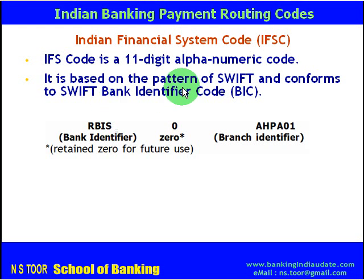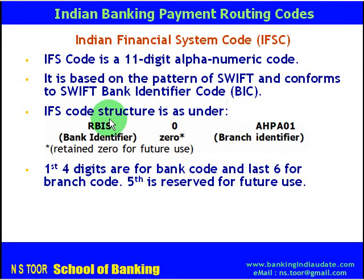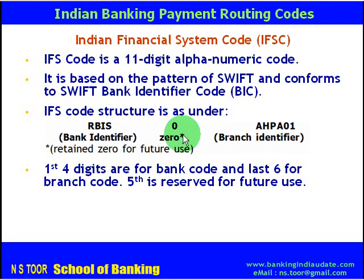IFSC is based on the pattern of SWIFT and it conforms to SWIFT BIC — Bank Identifier Code. The IFSC structure is like this: the first four digits represent the bank name, so they are called the bank code. The last six digits represent the branch identification, so they are called the branch code. The fifth character is reserved for future use and is kept as zero.